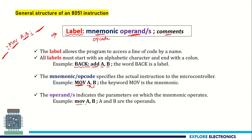Similarly, MOV A, B — here A and B are the operands. 'Back' is the label we used and MOV is the opcode. The label can be written like this; an opcode can be MOV or ADD. Operands can be A, B, or any other registers R0 to R7 or DPTR — whatever we require, we are going to use those.